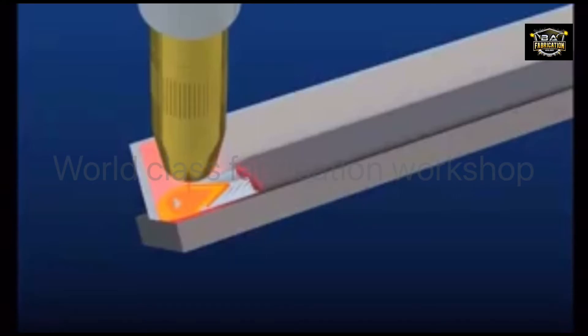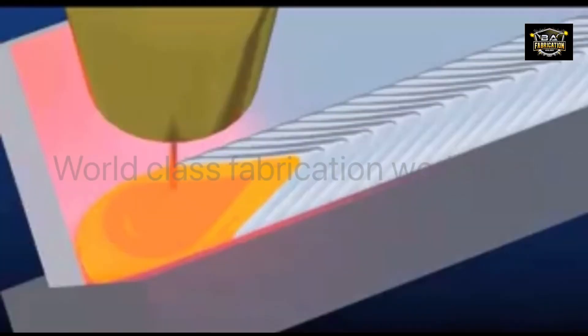In both the self-shielded and gas-shielded processes, the flux forms a thin layer of slag that protects the weld as it cools. This slag also helps the solidifying weld to take a consistent low-profile shape.